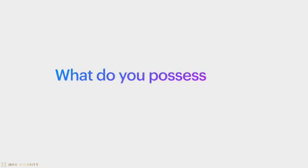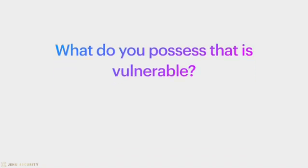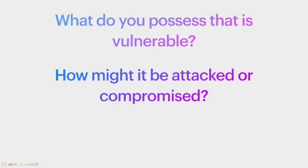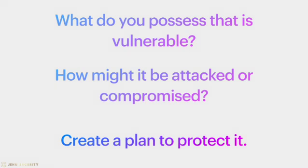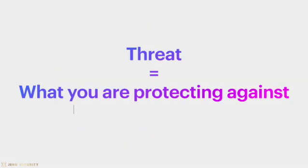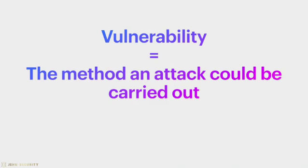Another way of discussing this is that first you need to look at what information or other things of yours are potentially vulnerable and how they might be attacked. Then you design a plan for the best way to protect against those possible attacks. A threat is what you are protecting against — a thief, a jealous partner, a stalker, or a company looking for your data. A vulnerability is a method or approach that the threat actor — that is, the person or entity behind the threat — may use to carry out an attack.